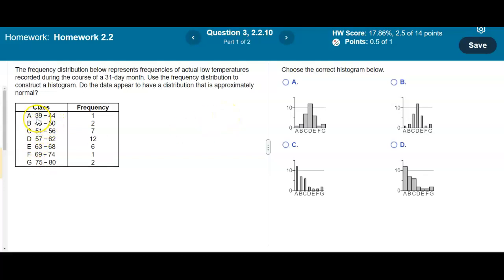So here are your classes and you can see that we have class A, B, C, D, E, F, and G. Here's our frequency. We start at 1, go to 2, 7, and then 12, 6, and then 1, and then 2.